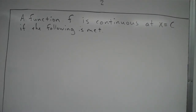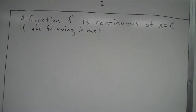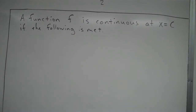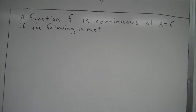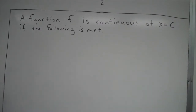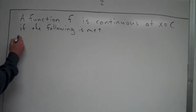Let's take a sec to talk about the formal definition of continuity at a point. A function f is continuous at x equals c if the following are met. There are three things that have to occur in order for a function to be continuous at a point. It's kind of silly because if you're just looking at a graph, it's so obvious to tell whether something is continuous or not, but this is the formal definition.